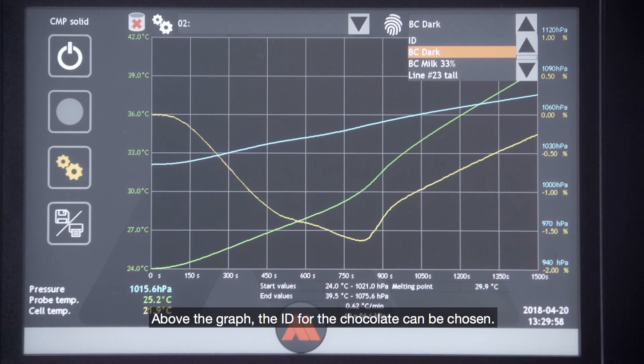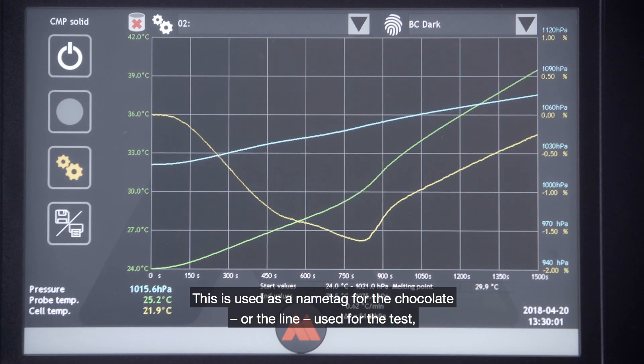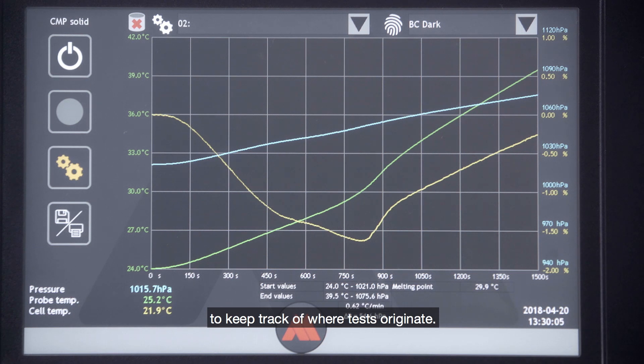Above the graph, the ID for the chocolate can be chosen. This is used as a name tag for the chocolate or the line used for the test to keep track of where tests originate.